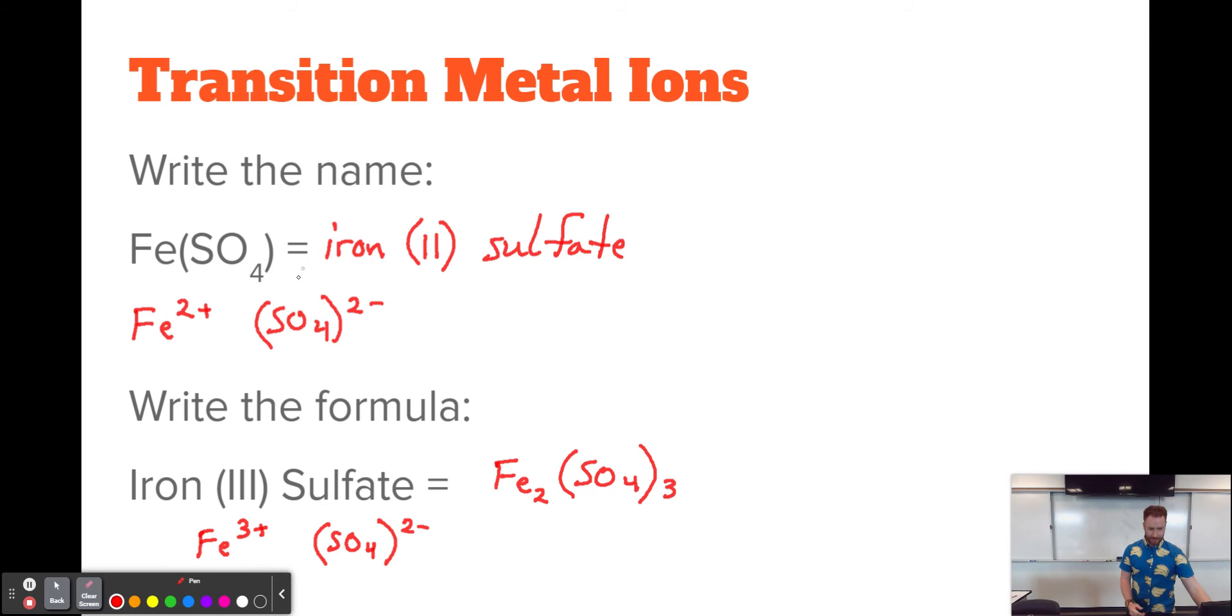So as you can see, both of these things are iron sulfate, but they're also very, very different molecules because this one just has one iron and one sulfate. This has two irons and three sulfates, which is really different. So that Roman numeral in the middle that indicates the charge or the oxidation state is super, super important.